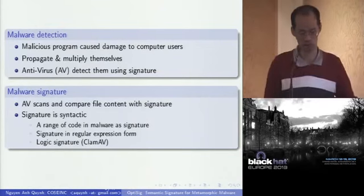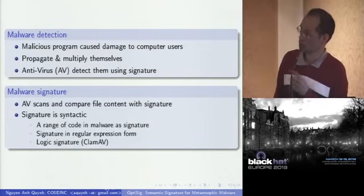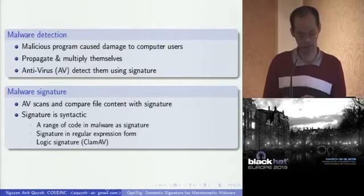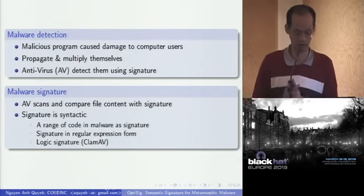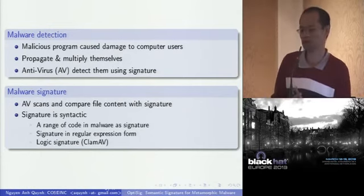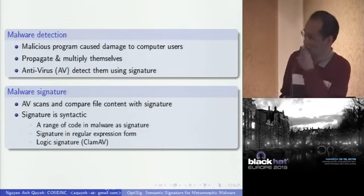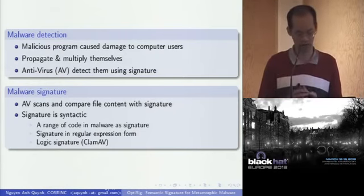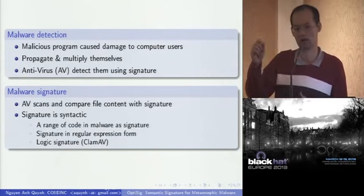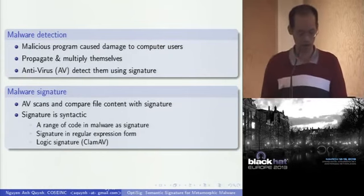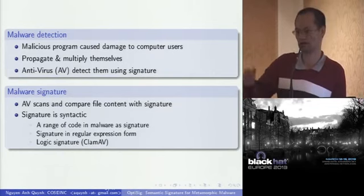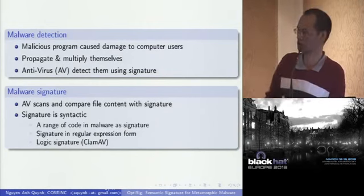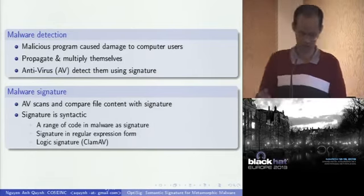Malware is a program that causes damage to computer users. One important thing about malware is that they propagate and multiply themselves when they infect your machine. To detect malware, we use the antivirus or AV. The main method for the AV to detect malware is to use the signature. The AV has a huge database of signatures, and each malware has one signature inside the database. When the AV scans a suspected file and the signature matches, the AV can tell you the file is infected.